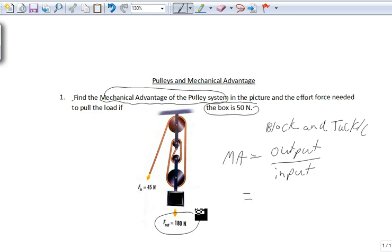So if the output force is 180 newtons and the input force is only 45 newtons, then we can find the MA. So 180 divided by 45 is 4. 4 what? 4 nothing. Mechanical advantage has no units.